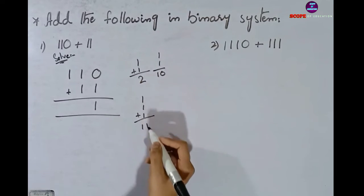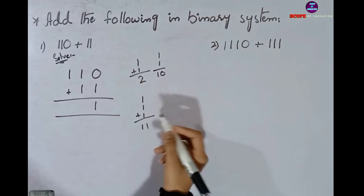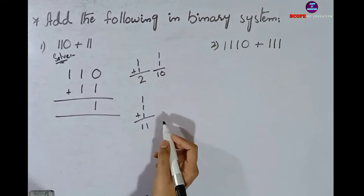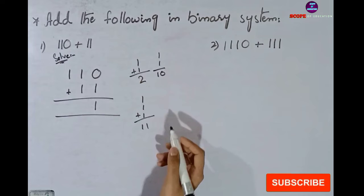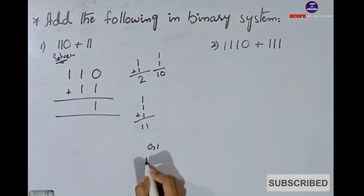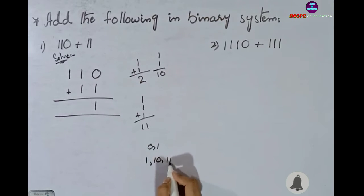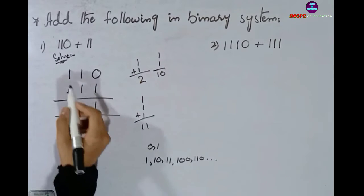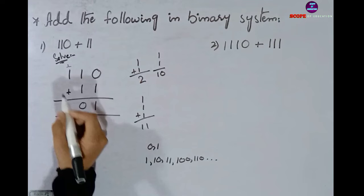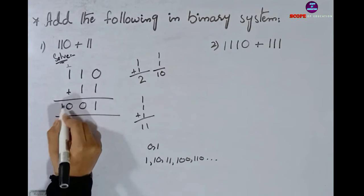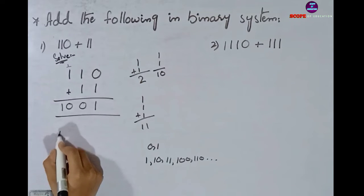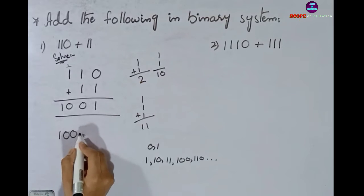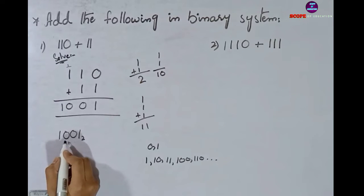One plus one will become 10. When two ones come together, it equals 10. Then 10 comes forward. Here we get 10. Our first question's addition answer has come: 1001.